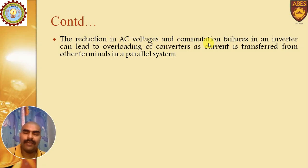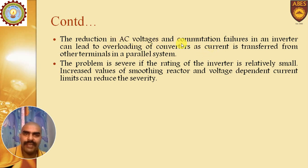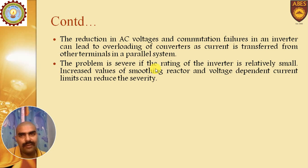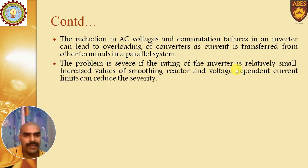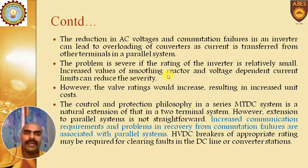The reduction in AC voltage and commutation failure in an inverter can lead to overloading of a converter, as current is transferred from other terminals in a parallel system. If there is any commutation failure, this may lead to overloading of the converter. This problem will be more severe if the inverter rating is small. Increased value of smoothing reactor and voltage dependent current limits can reduce the severity, but they will increase the extra cost of a parallel MTDC system.